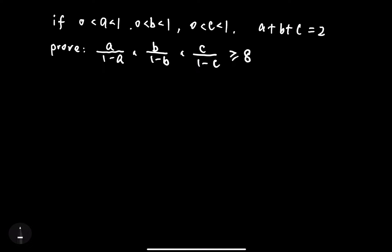Today I'm going to show you how to prove these hard inequalities. So let's have a look at the question. There are three numbers A, B, C, and all of them have to be less than 1 but bigger than 0. There is also the extra condition A plus B plus C equals 2. We need to prove that A over (1 minus A) times B over (1 minus B) times C over (1 minus C) is greater than or equal to 8.